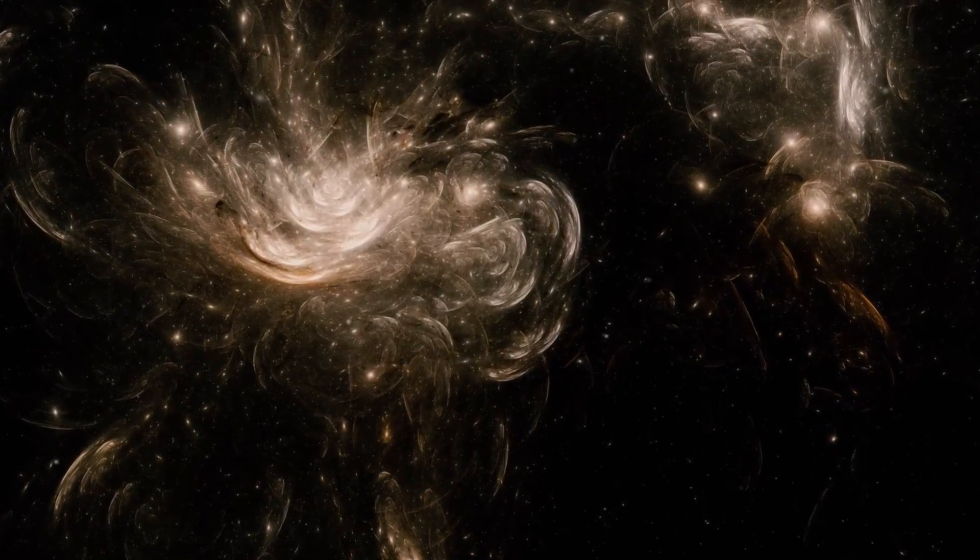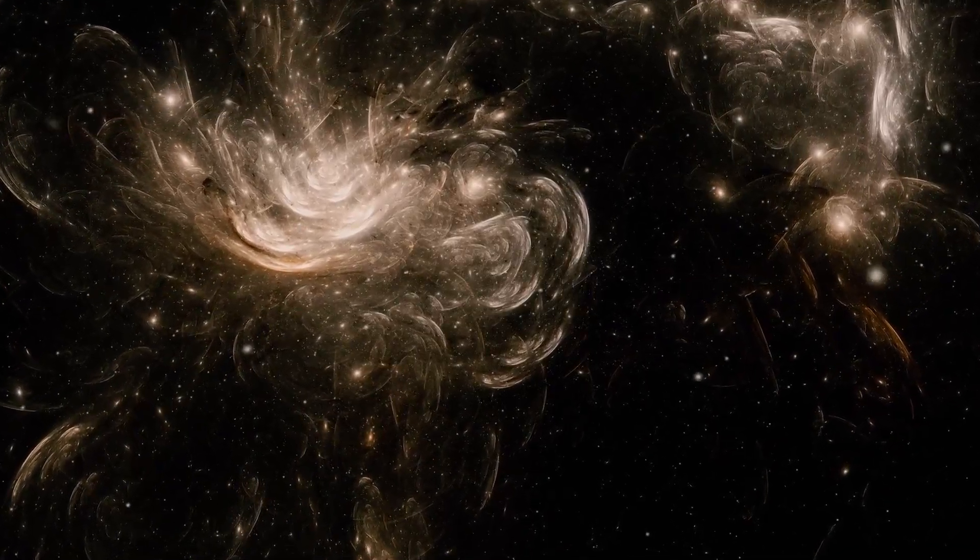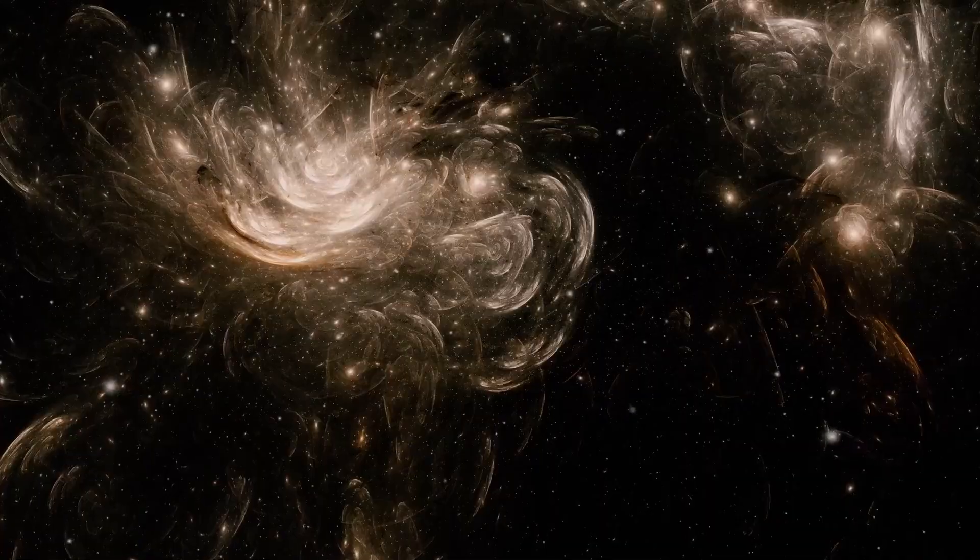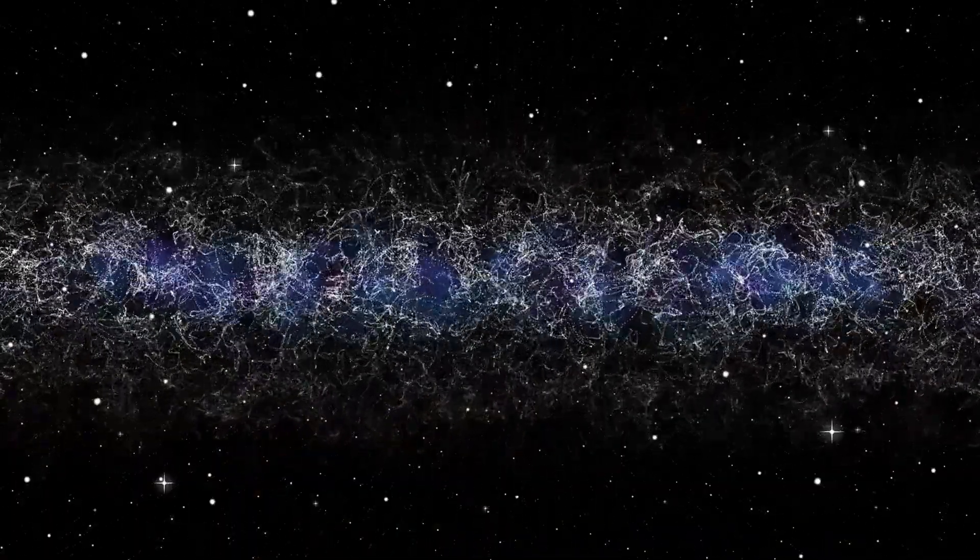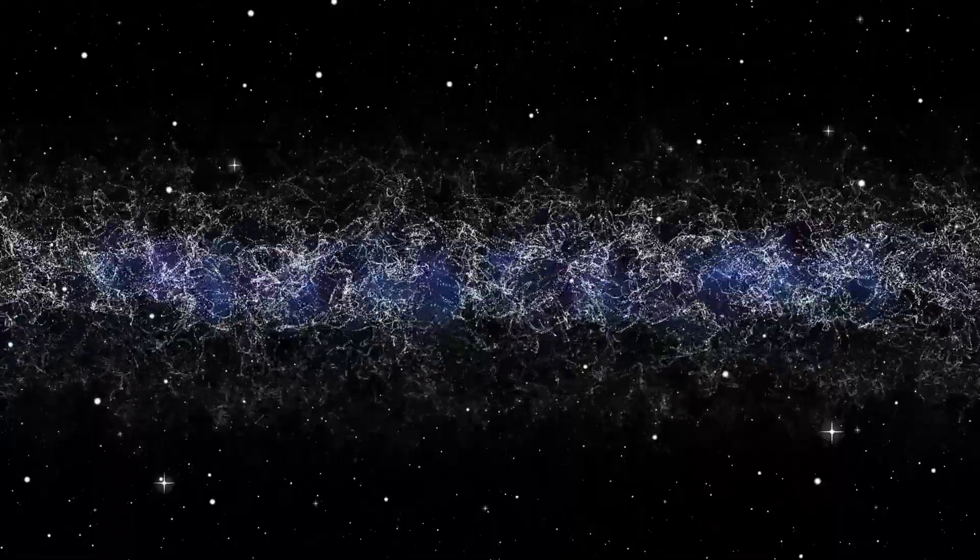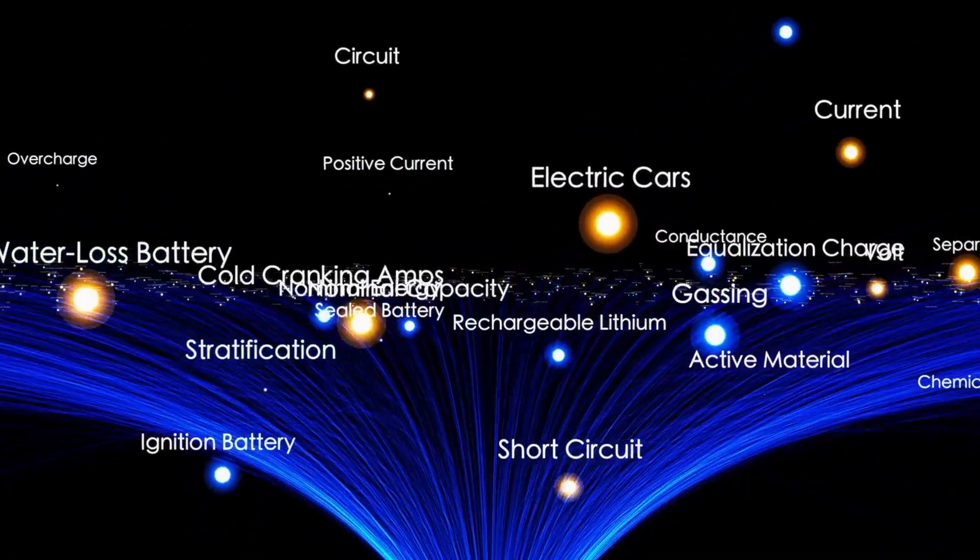If that's true, then what we're looking at may not be a natural interstellar wanderer but a designed probe, one that can shift surface area to steer, one that doesn't need propulsion because the stars themselves provide the thrust. That theory aligns disturbingly well with something else: the object's energy curve behaves as if it were decelerating deliberately as it nears our planetary plane, like something trying not to overshoot.